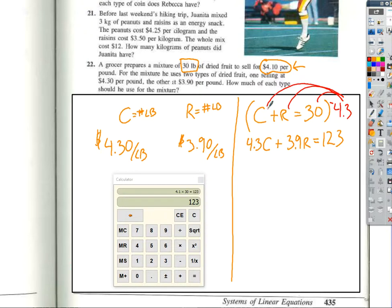So clearly, negative 4.3 times C is negative 4.3C plus negative 4.3 times R is negative 4.3R. And negative 4.3 times 30. I don't know off the top of my head, so I will just go ahead and do that. And I get 129. Does that seem right? Yes. 29. And that's a negative. Are we okay so far? Yes. Okay.